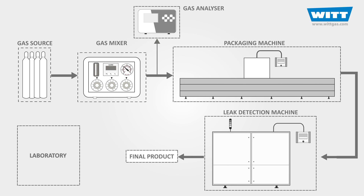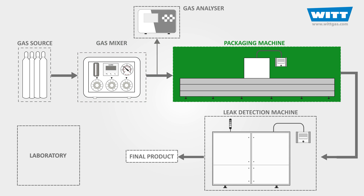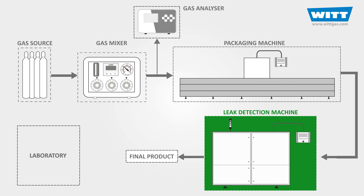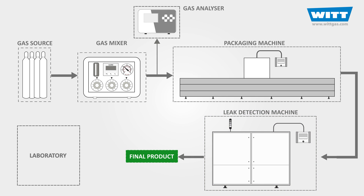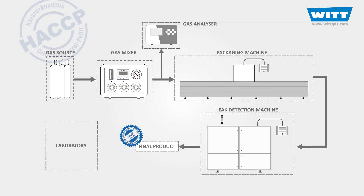In this video, we have gained a good understanding of the different elements of the MAP system. First, we started with the gas sources. Next, we made our desired gas mixture using the gas mixer, and then packed our product with the most suitable mixture of gases. Finally, we tested our package for any possible leakage with the leak detection machine. If our package is flawless and has no leaks, we can deliver top quality food products to customers, thanks to the MAP method.